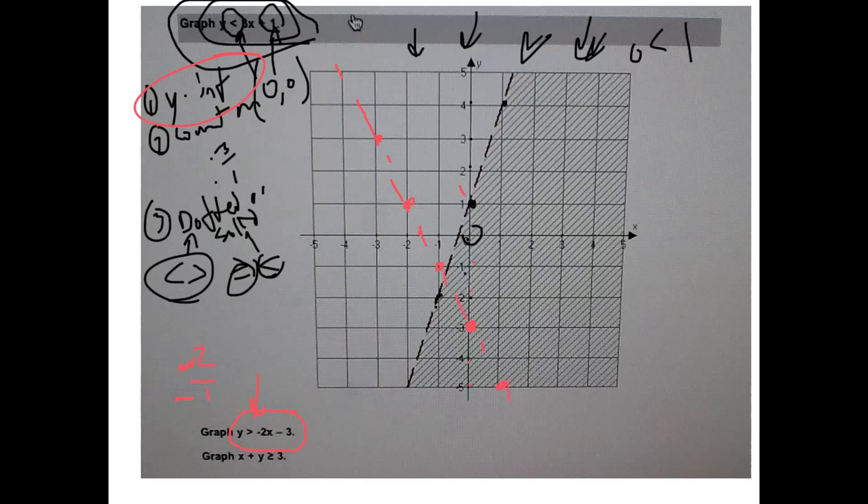Now last step: which side do we shade? I recommend doing zero zero. Let's plug it in. Zero for the y is greater than negative two times zero minus three, which this cancels out, it's zero. So you've got zero is greater than negative three. Is that true? Yeah, zero is bigger than a negative. So therefore we include this, so we shade all this right here.